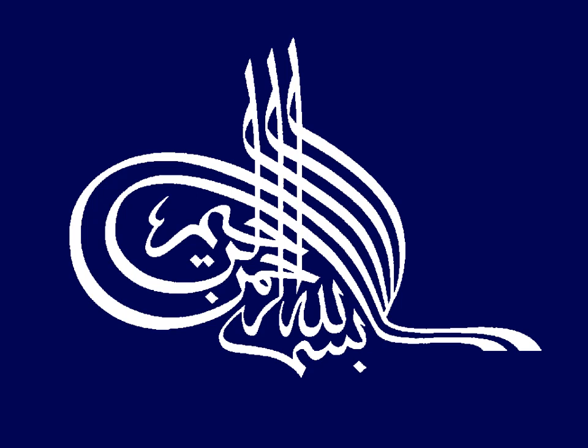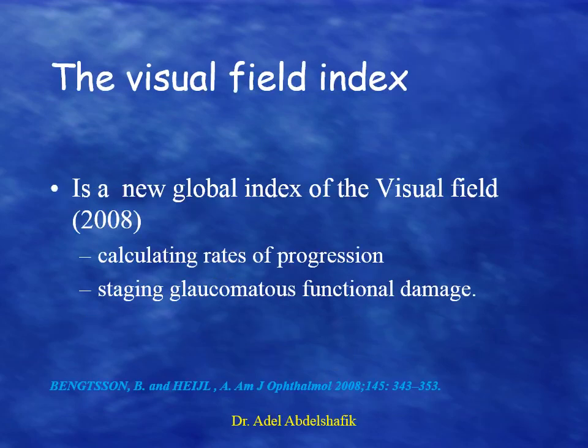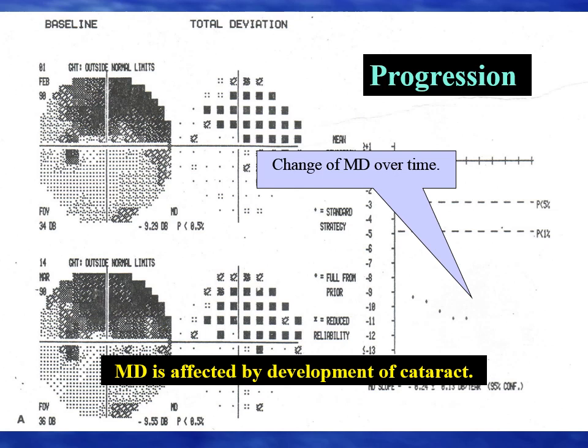Today my talk is about the visual field index. It is a new global index that can calculate the rate of glaucoma progression and also helps with staging the amount of glaucoma damage. Before that, we used to depend on the mean deviation to know about the rate of progression and to stage the glaucoma.